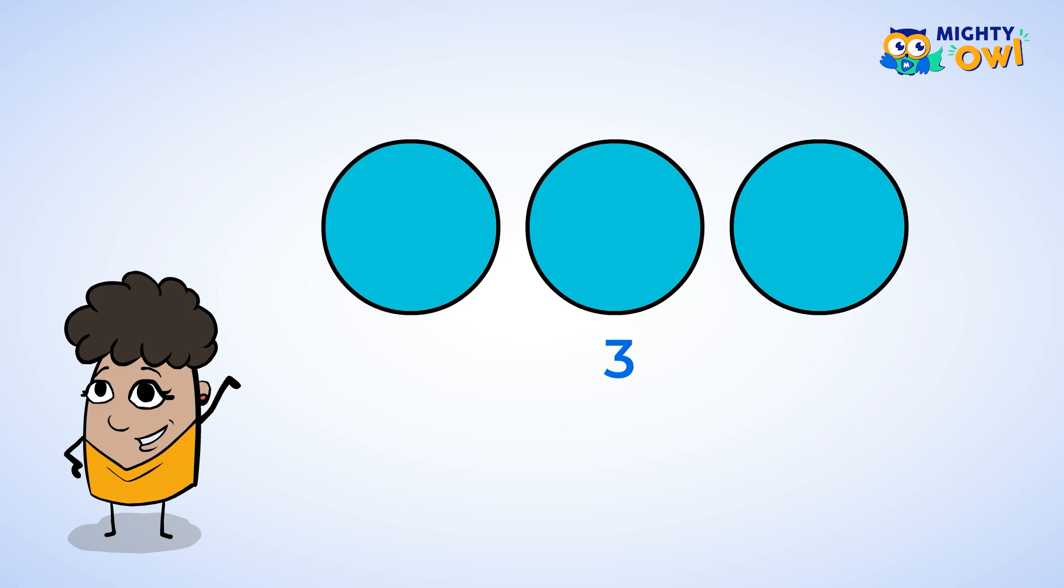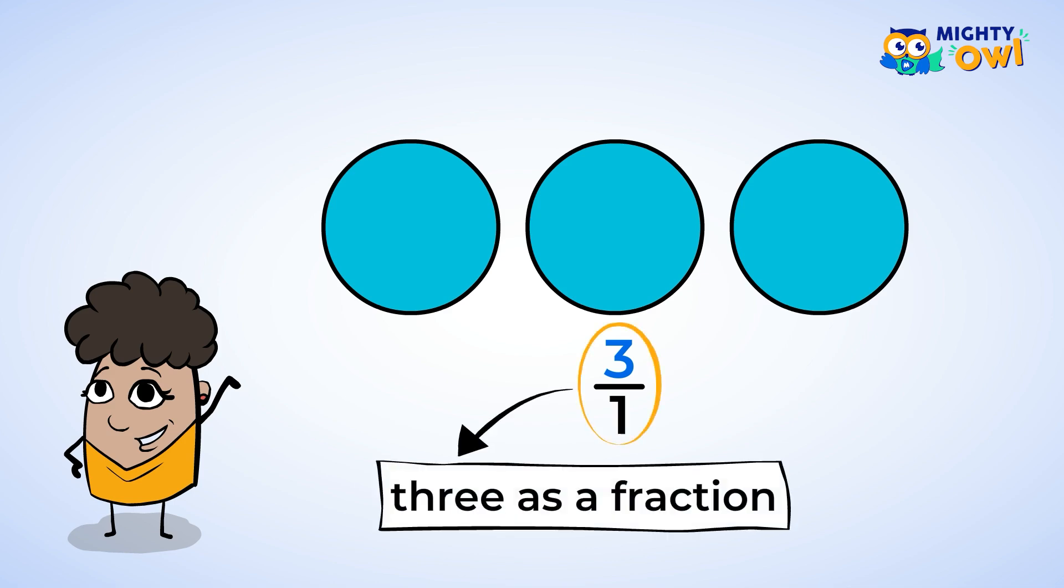This means we have three parts shaded, our numerator, out of one, our denominator. Look at that! We just represented three as a fraction.